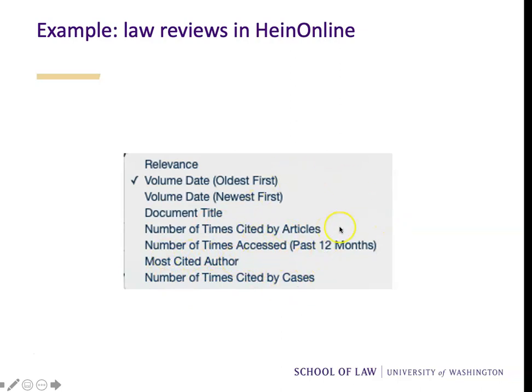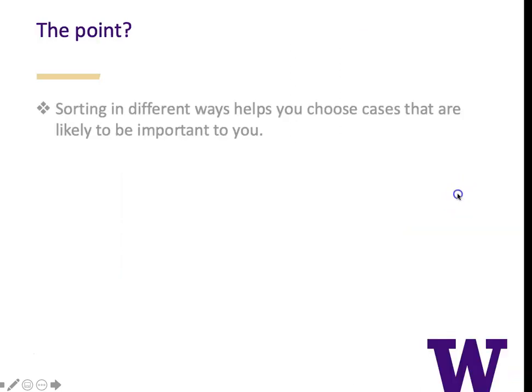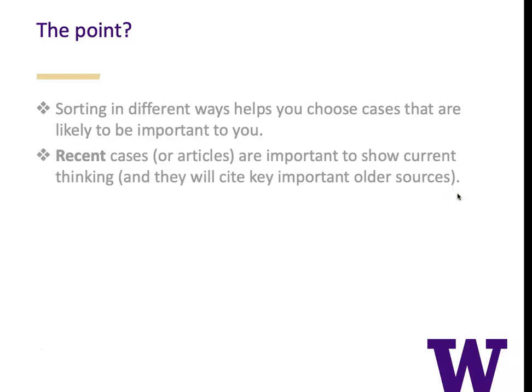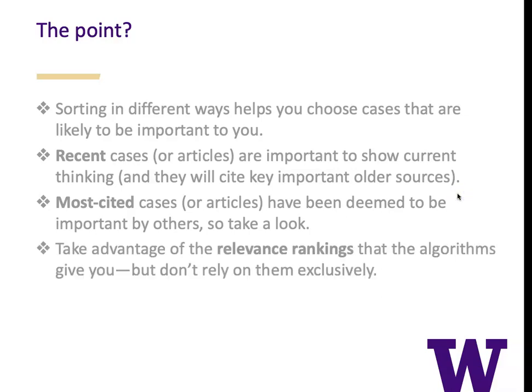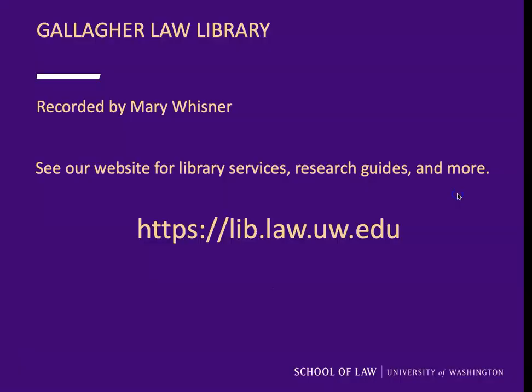So I have different options for sorting. What's the point of all this? Sorting in different ways helps you choose cases that are likely to be important to you. Recent cases or articles are important to show current thinking, and they will cite the important older cases. Most cited cases or articles have been deemed to be important by others, so take a look. Take advantage of the relevance rankings that the algorithms give you, but don't rely on them exclusively — try looking at the other sorts. This has been Mary Wisner from the Gallagher Law Library. See our website for library services, research guides, and more.